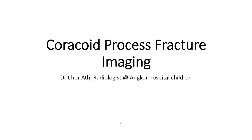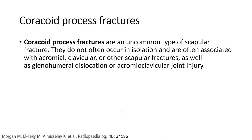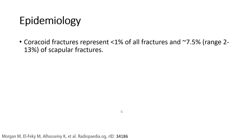Hello everyone, today I am going to talk about coracoid process fracture. Coracoid process fractures are an uncommon type of scapula fracture. They do not often occur in isolation and are often associated with acromioclavicular or other scapula fractures, as well as glenohumeral dislocation or acromioclavicular joint injury. Coracoid fractures represent less than 1% of all fractures and 7.5% (range 2 to 13%) of scapula fractures.